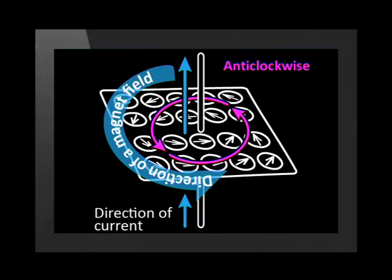They line up pointing in an anti-clockwise direction. This means the magnetic field is anti-clockwise around the wire if the current flows upwards.